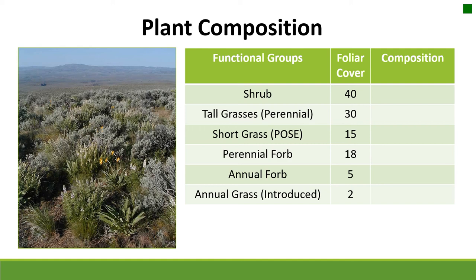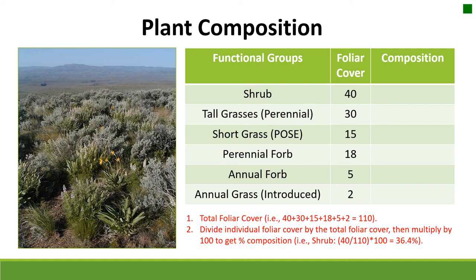Calculating plant composition is a two-step process. First, sum up the total foliar cover: adding 40, 30, 15, 18, 5, and 2 gives a total foliar cover of 110. Then divide each individual functional group's foliar cover by the total and multiply by 100 to get the composition percentage. For example, shrubs have 40% foliar cover; 40 divided by 110, multiplied by 100, gives 36.4% composition. You should go through and calculate the composition for each functional group in your note guide table.